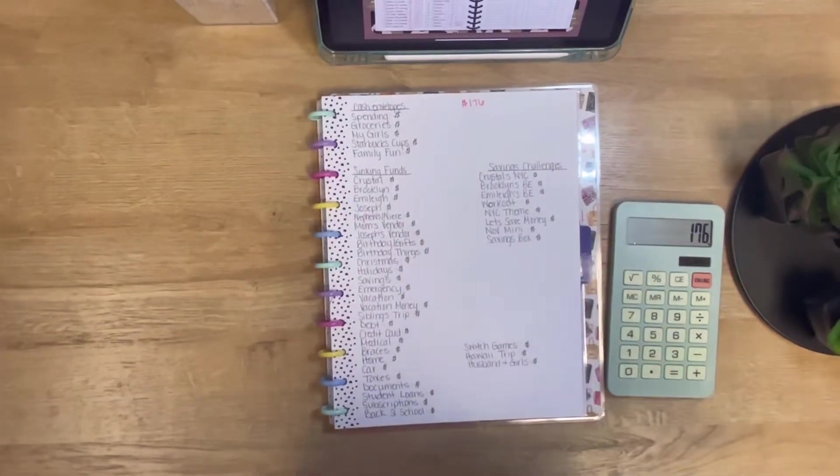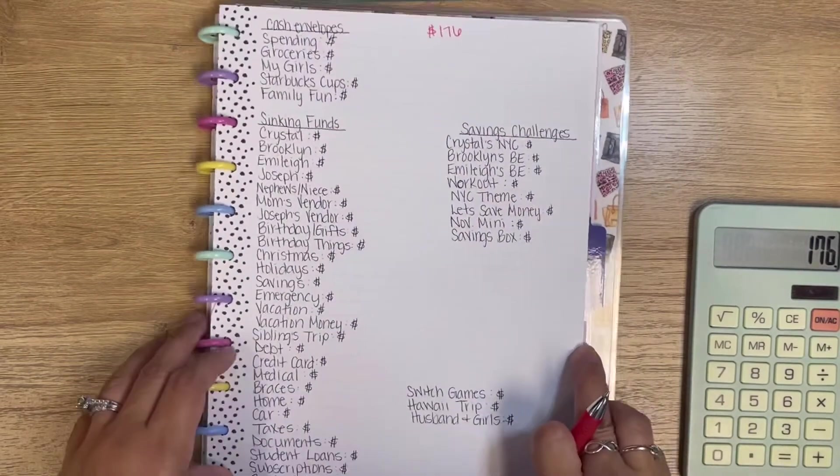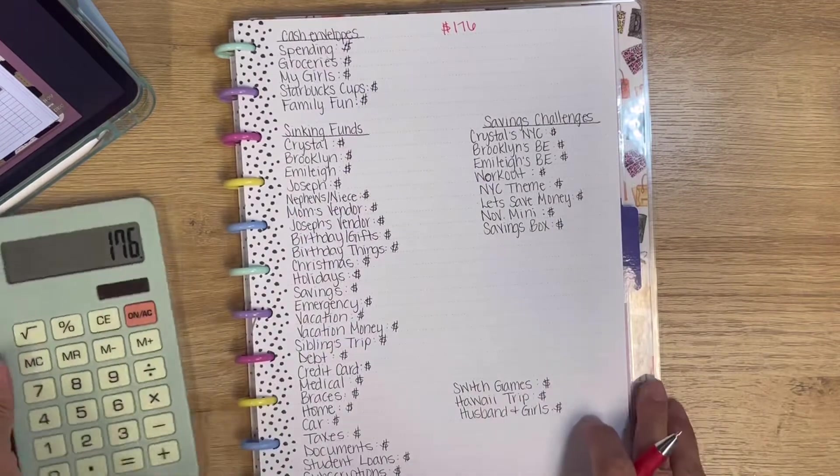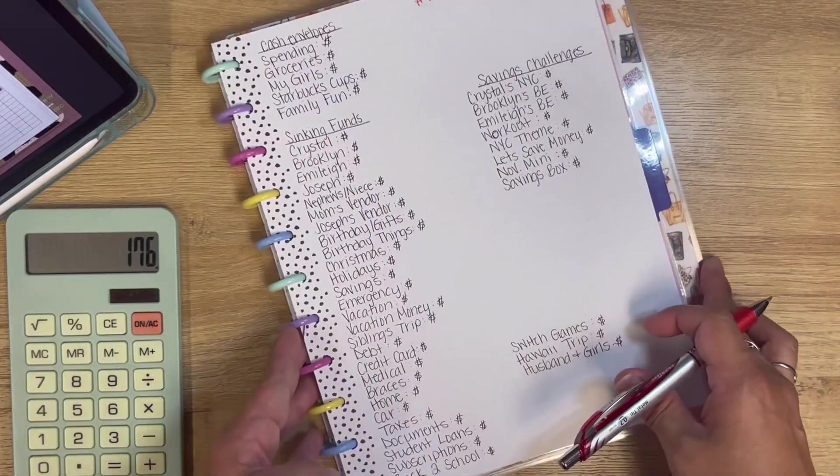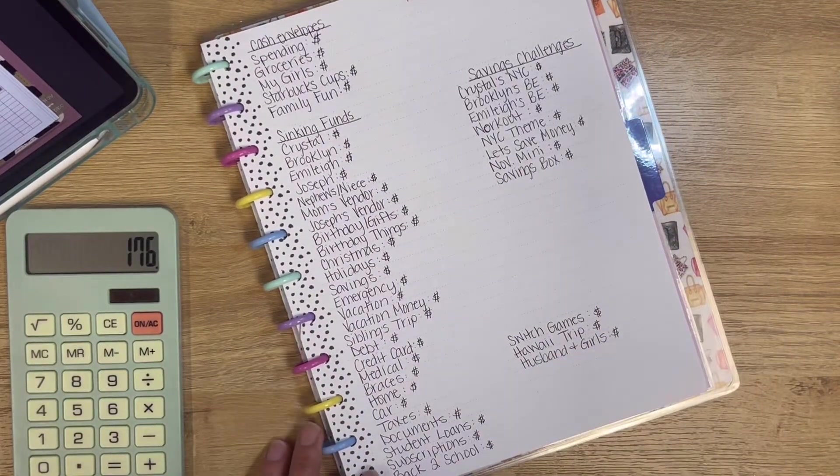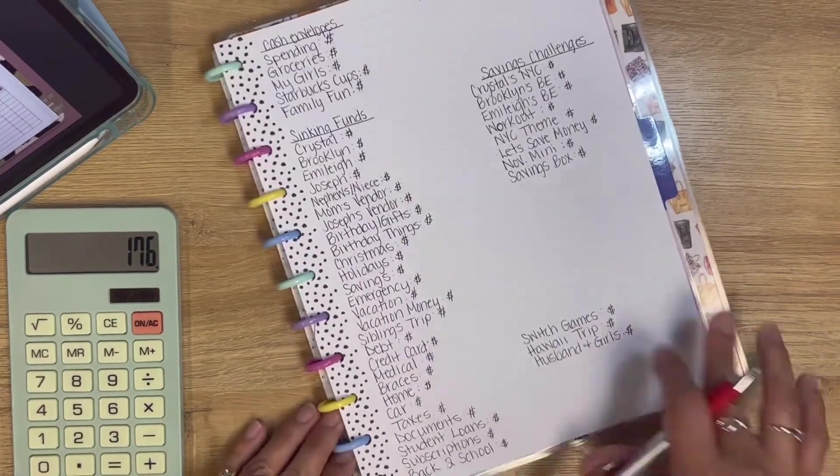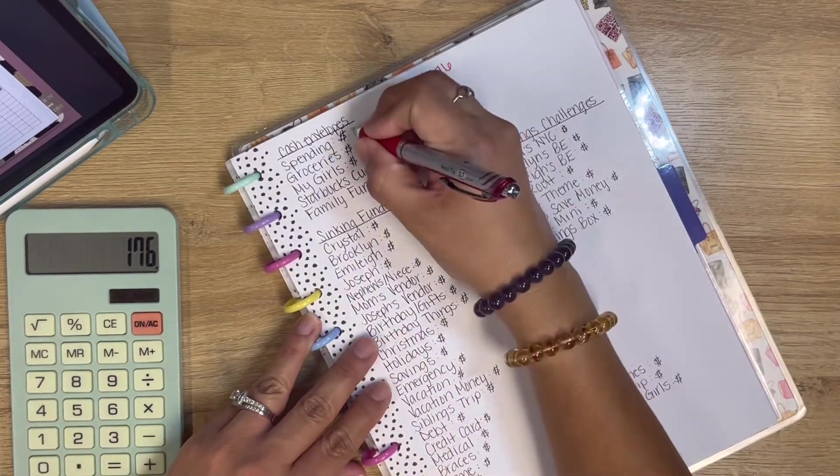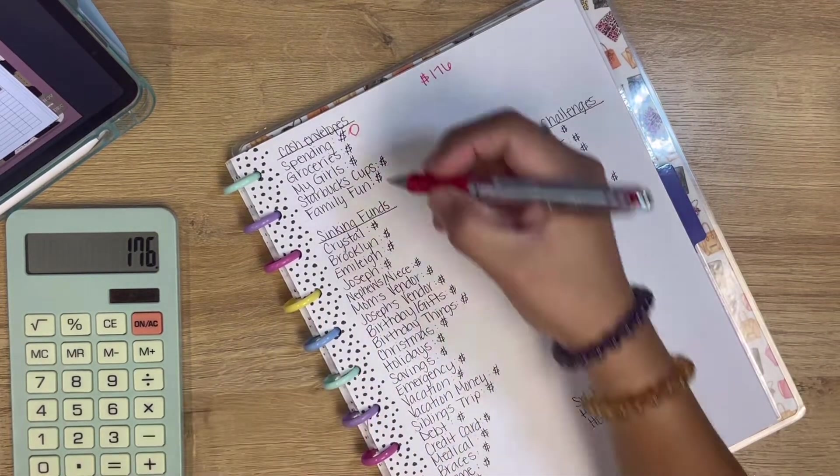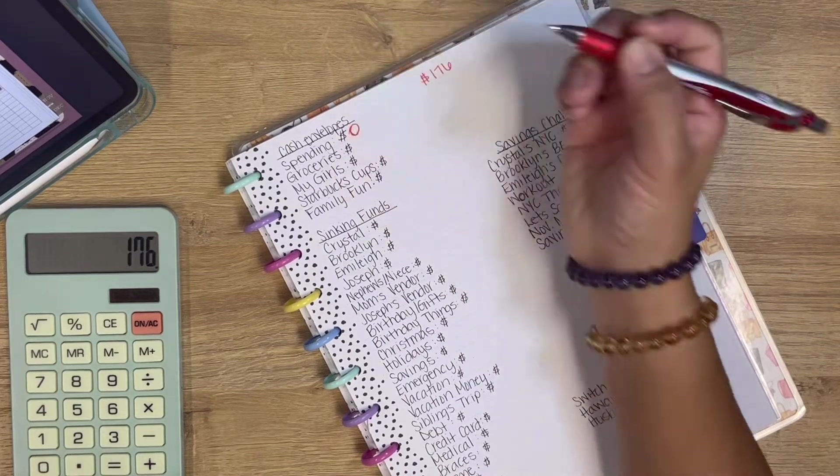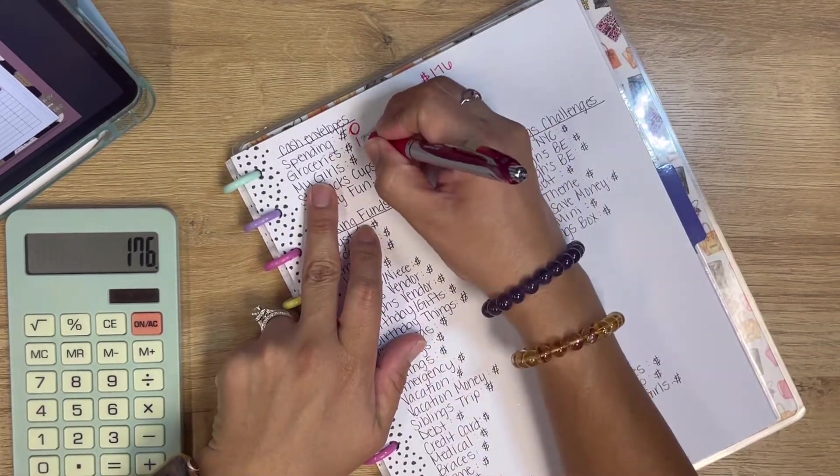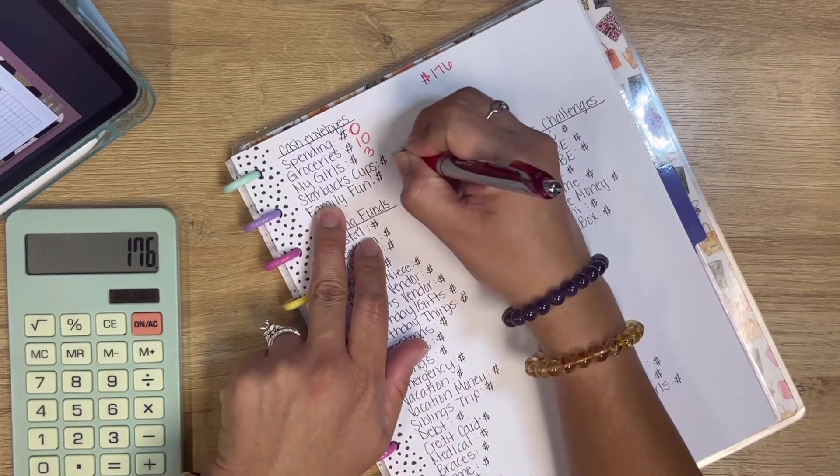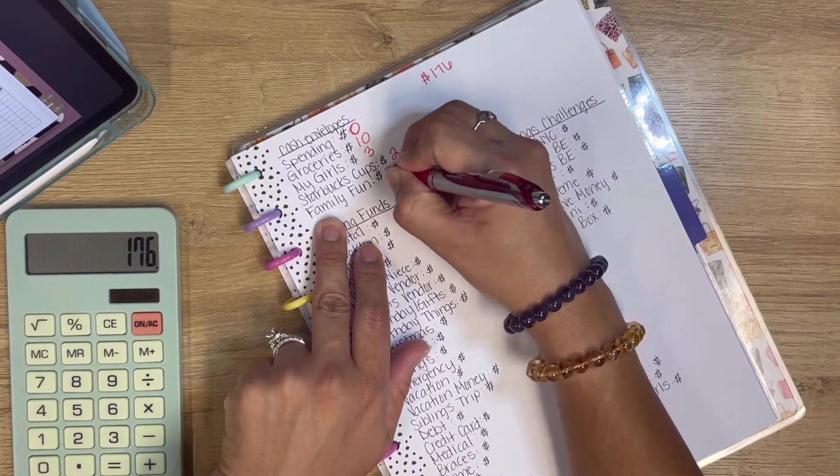Let me see if I need to zoom you guys in some. Hopefully you guys can see that. I'll move it up once I get down to the bottom. For spending this week, we are not going to be putting anything in there. Groceries, we're just going to add $10. My Girls, we're going to add $3. Starbucks, $2, and Family Fun, $5.